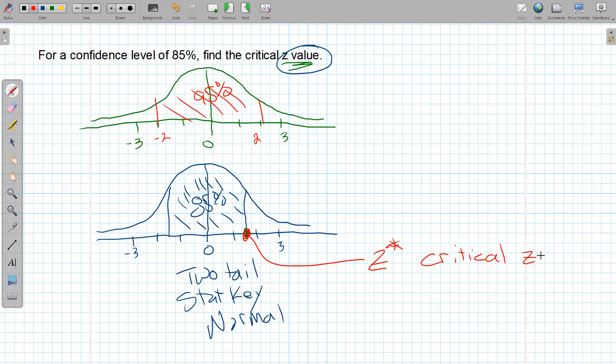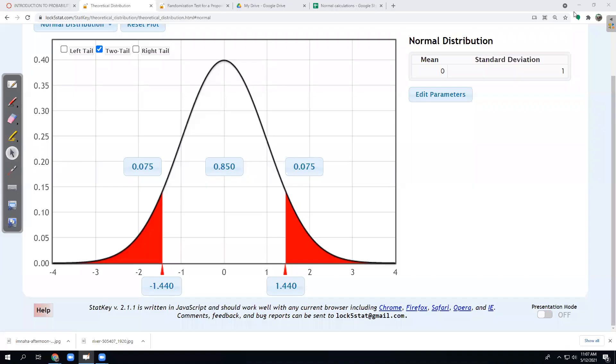It's what's called a critical z-value or a critical z-score. Critical z-value, a.k.a. z-score. And for 85 percent in the middle, StatKey says that critical z-score, our book calls it z-star, should be about 1.44. I'll check if I got that right. Yep, 1.44.